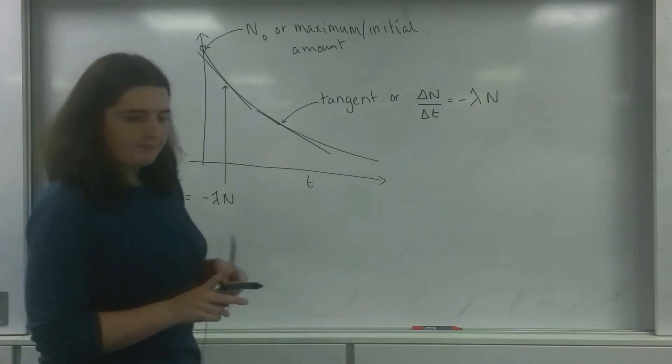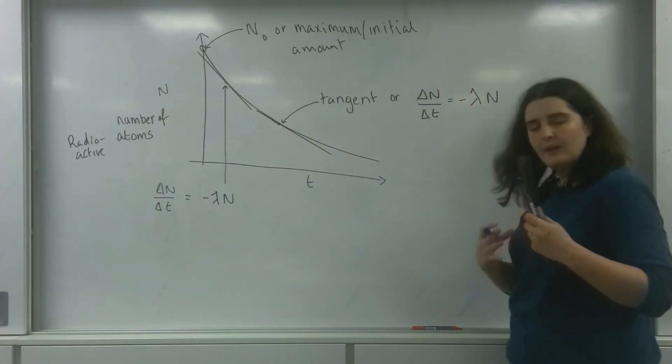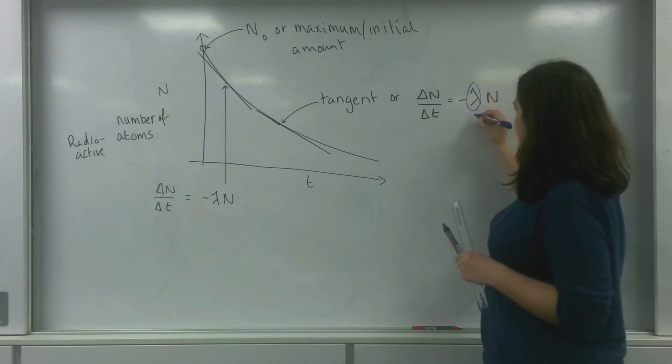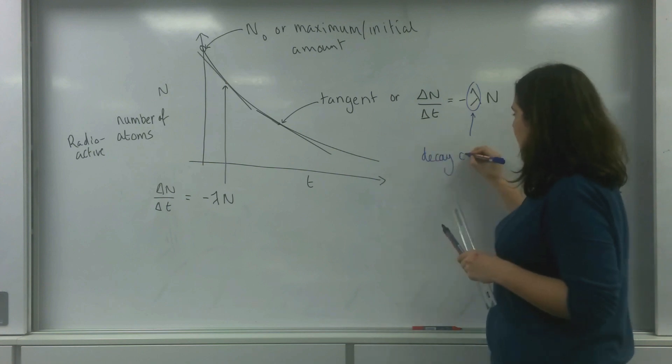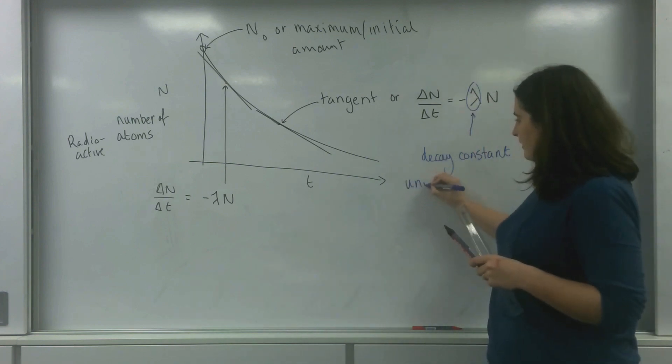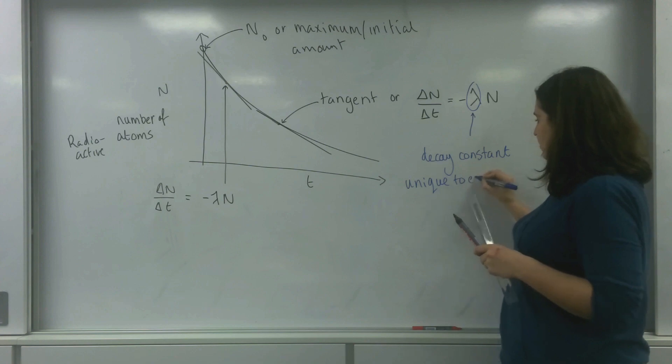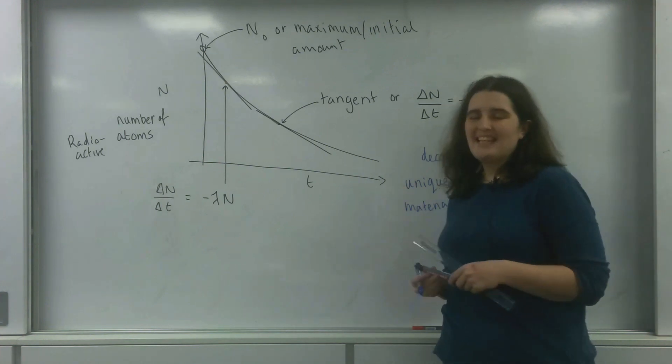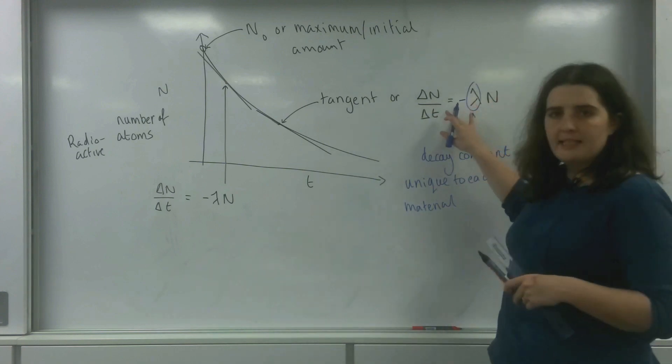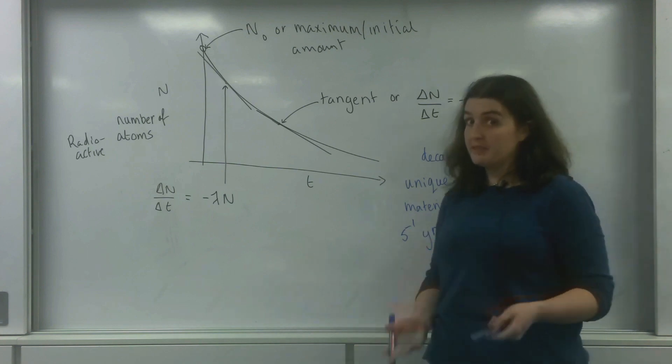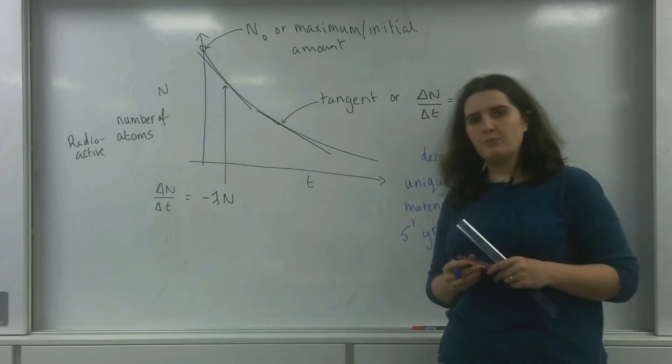What this lambda is called, and it's really vital. I know in waves it can be used in wavelength, but we're going to be using it as something different here. This lambda is known as the decay constant, and this is unique to each material. What this is, is a percentage that will decay over a certain amount of time. So you might see this as per second, you might see it per year, per day, per hour, etc.